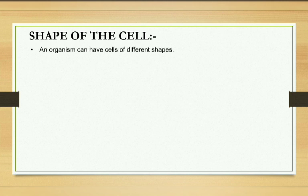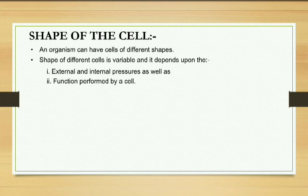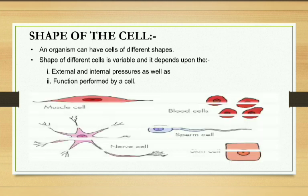Next: shape of the cell. There is no fixed shape for a cell. A cell may be regular or irregular. Irregular means like amoeba, because its shape is not fixed. The shape depends on two factors: external and internal pressure, and the function performed by the cell. Examples include muscle cells, blood cells, nerve cells, sperm cells, and skin cells — their shapes are all different.